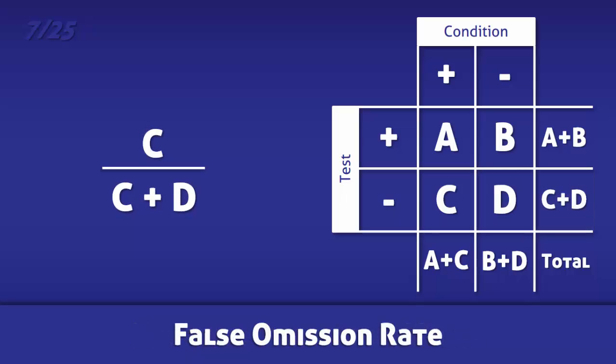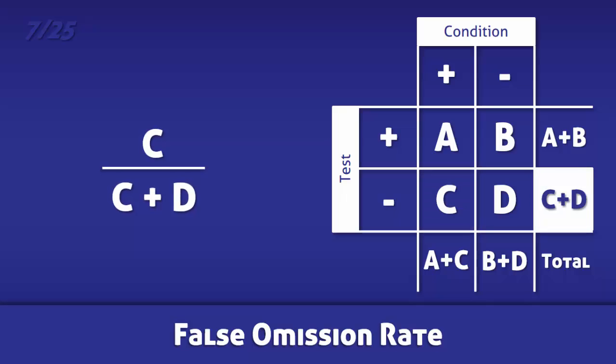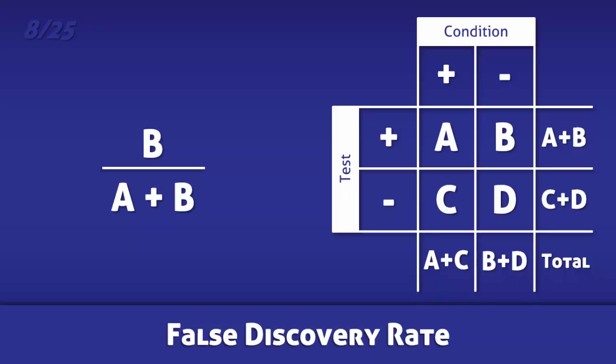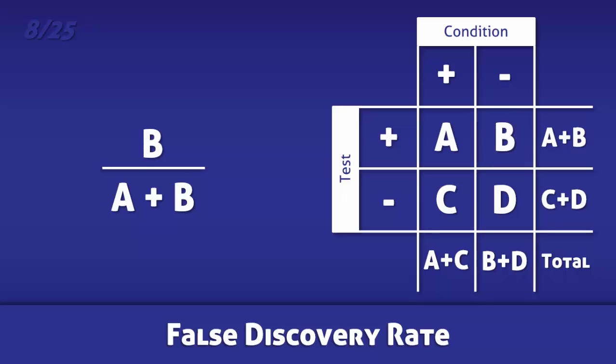For the false omission rate, divide the total number of false negatives by the total number of negative tests. For the false discovery rate, divide the number of false positives by the total number of positive tests.